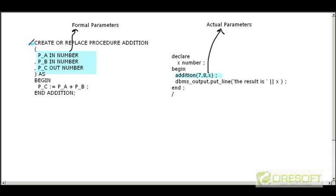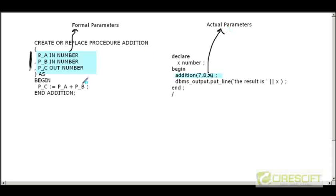Two more terms: formal parameters and actual parameters. In the procedure specification, p_a, p_b, and p_c are called formal parameters. In the calling environment, whatever values we send — 7, 8, and x — are called actual parameters. You don't need to do much with this distinction, but it is a naming convention that is commonly used.